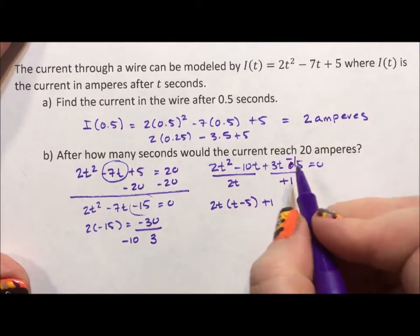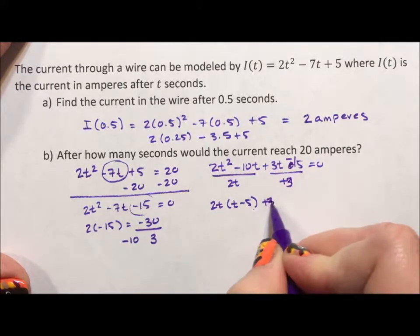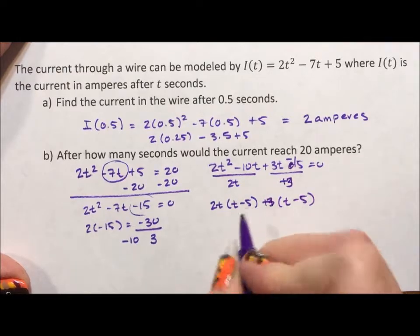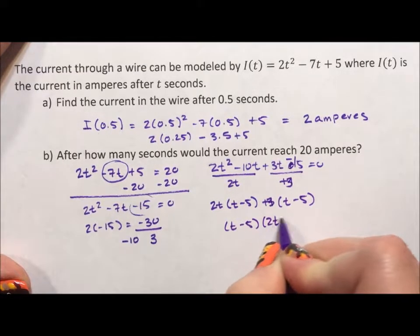Minus 15. Okay. Plus 3t minus 5. So we have t minus 5, 2t plus 3.